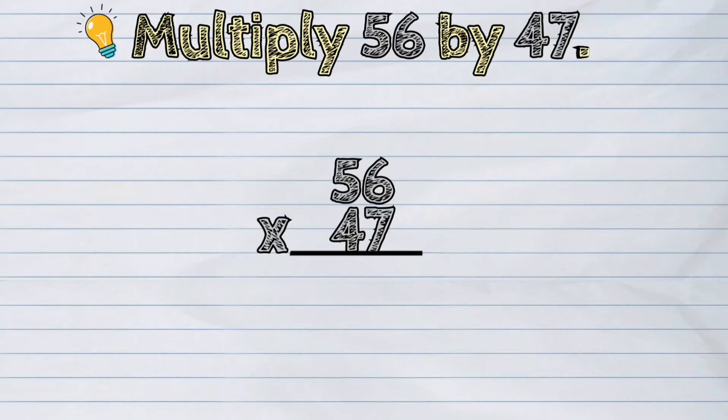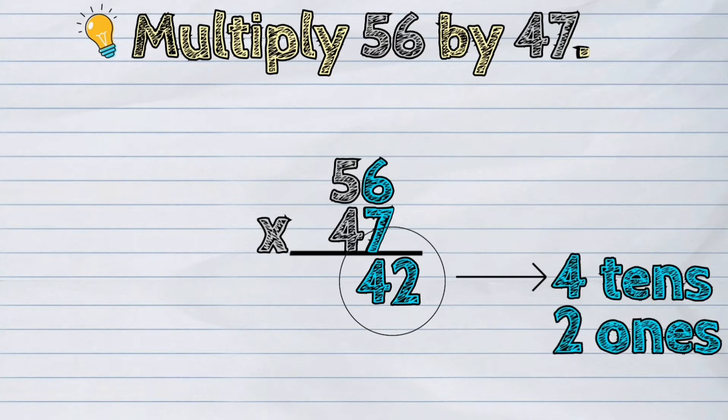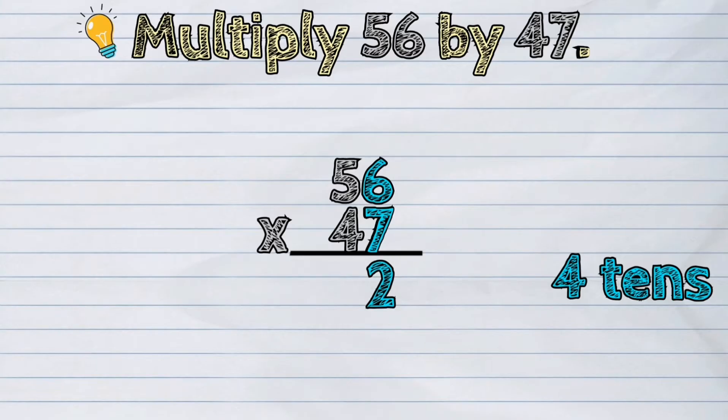Next, multiply first the ones in the bottom by the ones on the top. So, it's 7 ones times 6 ones is equal to 42 ones. The answer is a 2-digit number. Thus, we need to regroup it because it should only be 1 digit per column. 42 ones if regrouped is 4 tens and 2 ones. Now, we will put the 2 ones in the ones place and carry the 4 tens above the tens place.